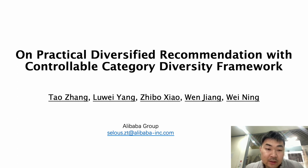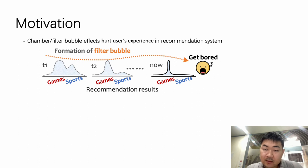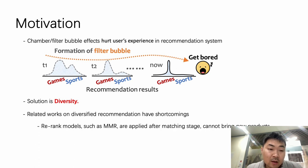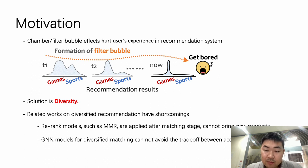First is motivation. Filter bubble effects is a common phenomenon in recommendation systems. This phenomenon will hurt users' experiences in recommendation systems, and diversity is one of the solutions. But related works have shortcomings, like re-rank models cannot bring new products, and GNN models cannot avoid the trade-off between accuracy and diversity.